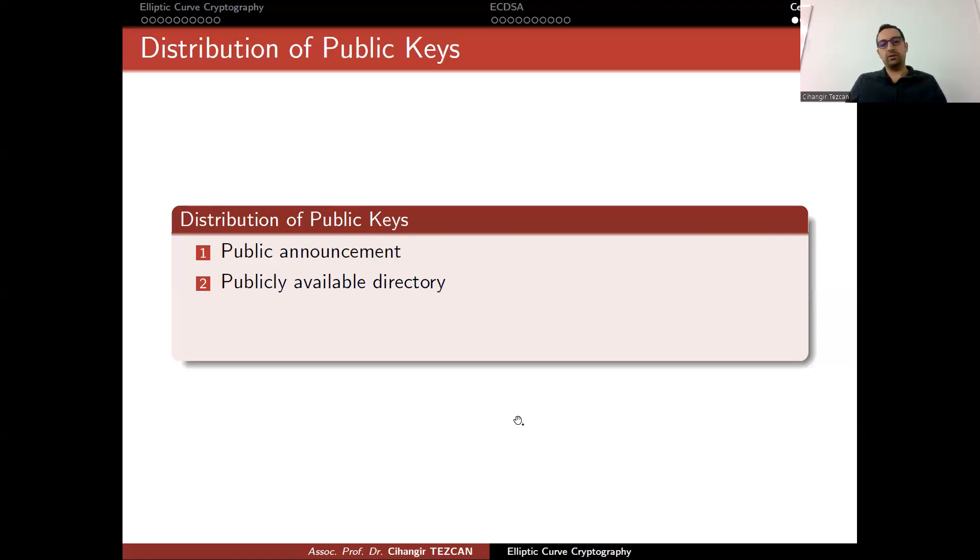Another method is to put every public key in a directory. Think about maybe 15 years ago, we had phone books where you could alphabetically search for a name and find the phone number of somebody. Instead of phone numbers, now we are putting public keys in a directory. What happened in the phone books also applies here because you find somebody, call them and realize they left that apartment maybe five years ago. It is hard to update it all the time.